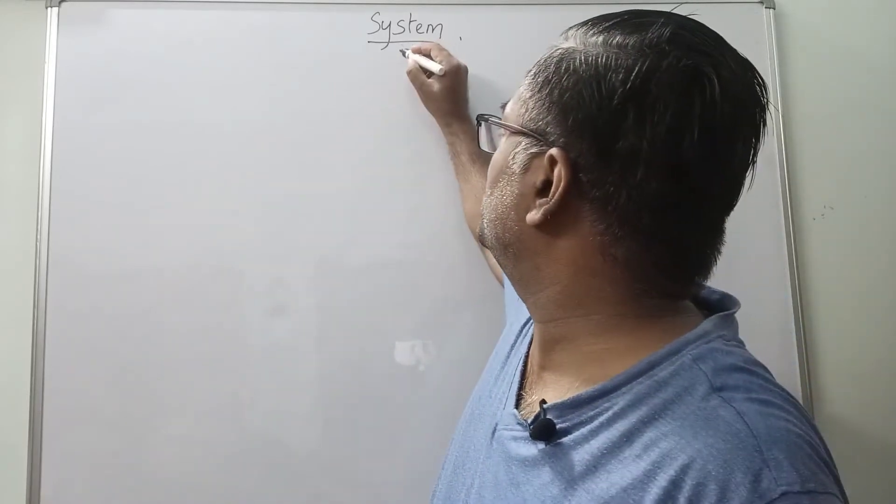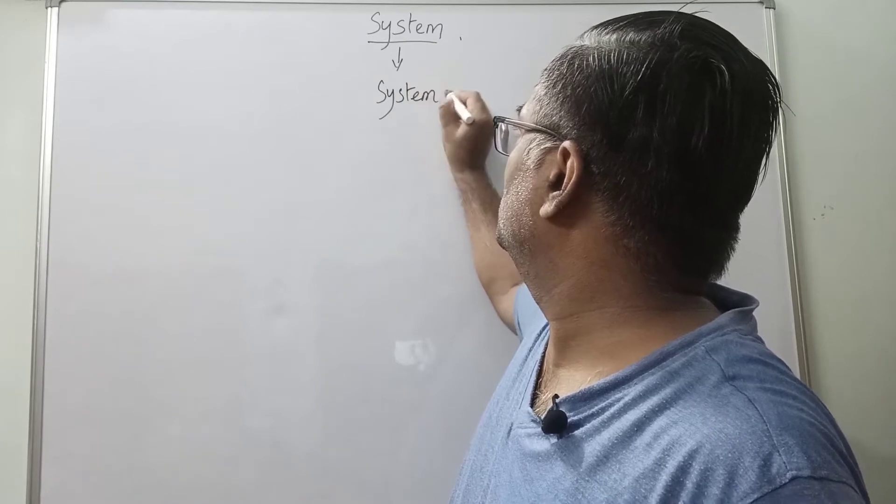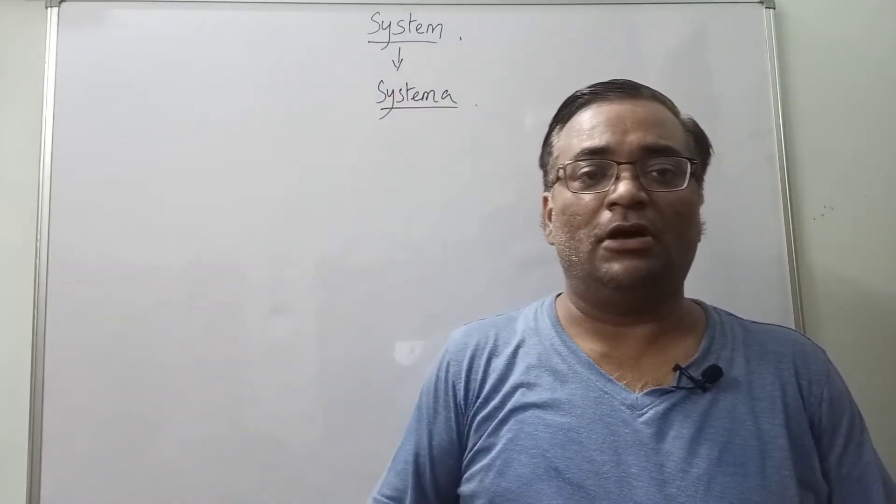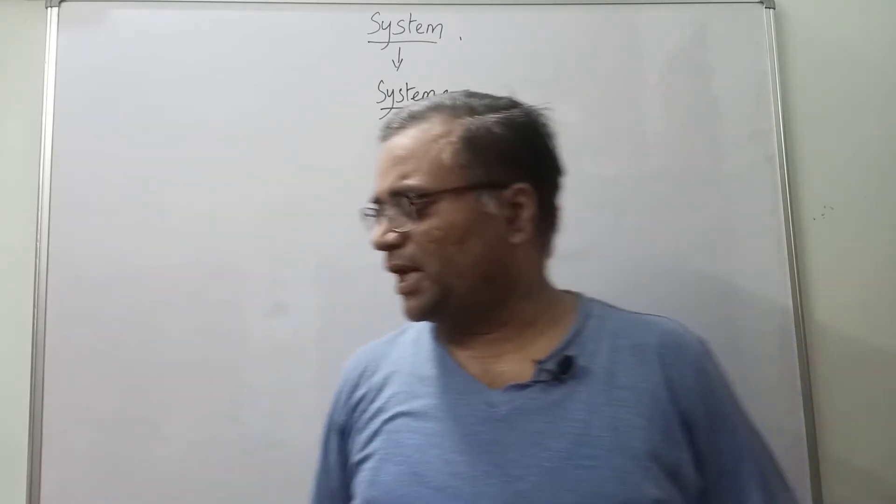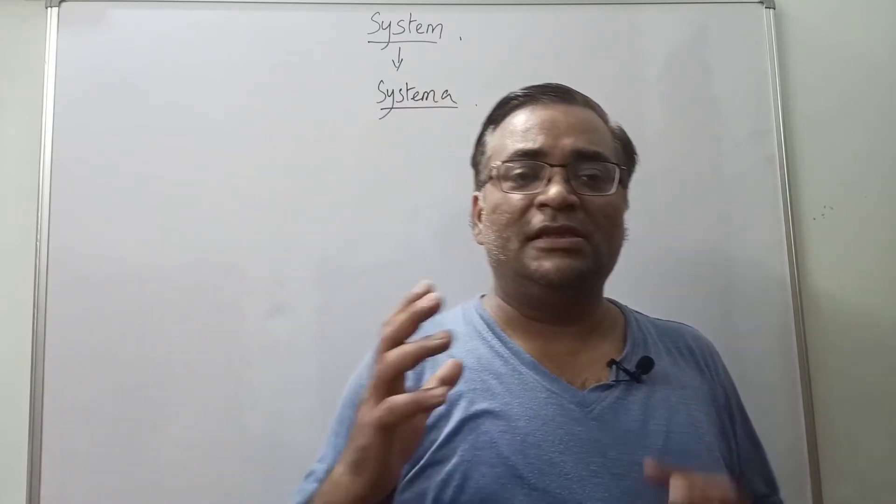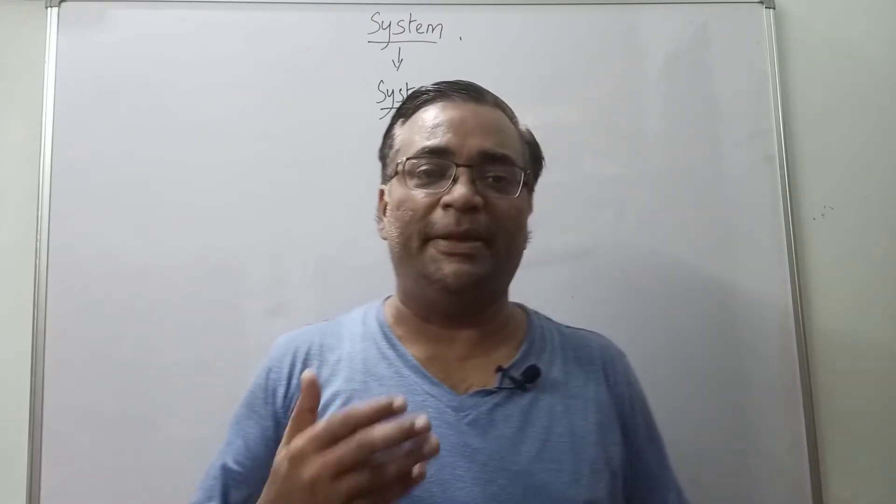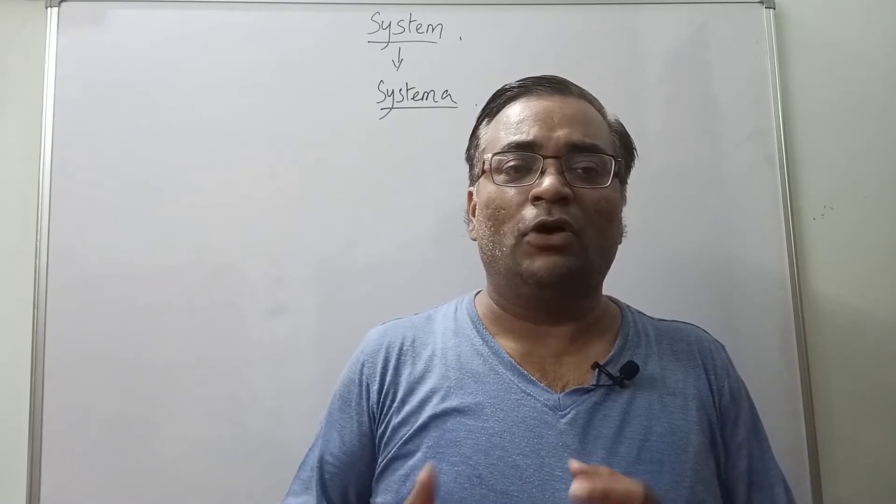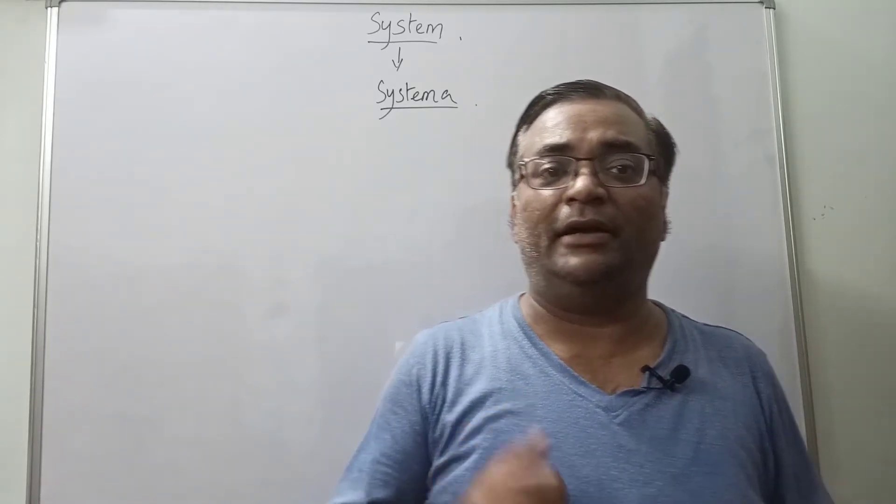The system is a term which means orderly arrangement of things or grouping of things to obtain some output. But bookish language is a normal way to understand. So what is a system? When components depend on a common goal to achieve the term, then we have a system.